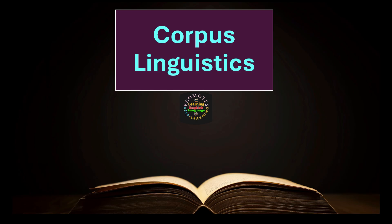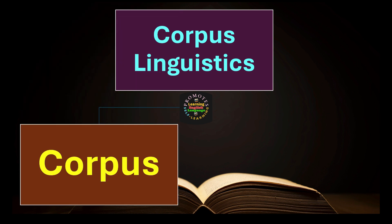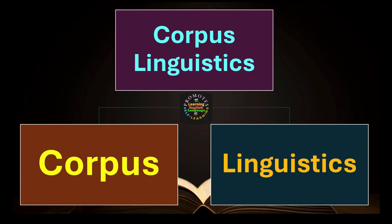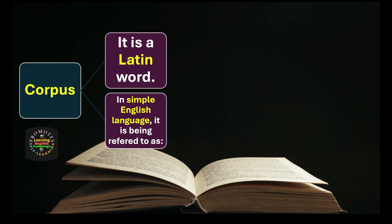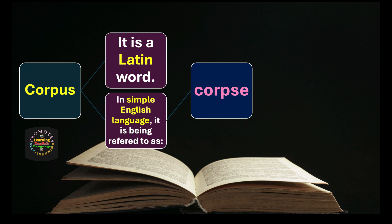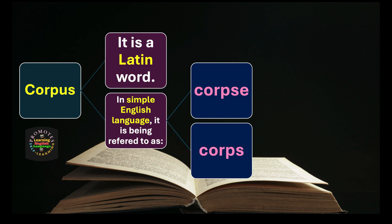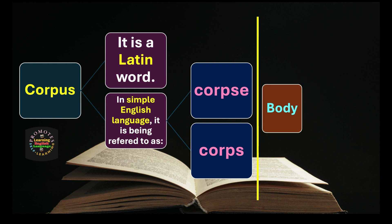Hello and welcome. Corpus linguistics is divided into two segments: the first one is corpus and the second one is linguistics. The word corpus is a Latin word. In simple English language, it is referred to as 'corpse' with spelling C-O-R-P-S-E, and we also have C-O-R-P-S. Both of them refer to the same Latin word corpus, and it refers to the idea of body.